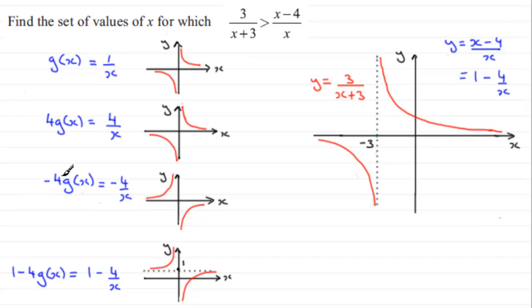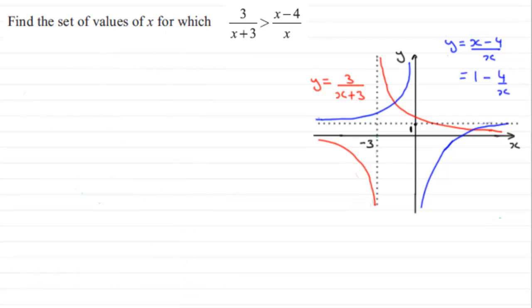And then -4g(x) gives us -4/x and the minus is a reflection in the x-axis. So just simply reflect that in the x-axis and this is what you get. And then adding 1 means that we create the equation 1 - 4/x and adding 1 just gives us a translation upwards of one unit. And notice the asymptote here, the horizontal asymptote y = 1. So if we sketch this on here then we're going to get something like this.